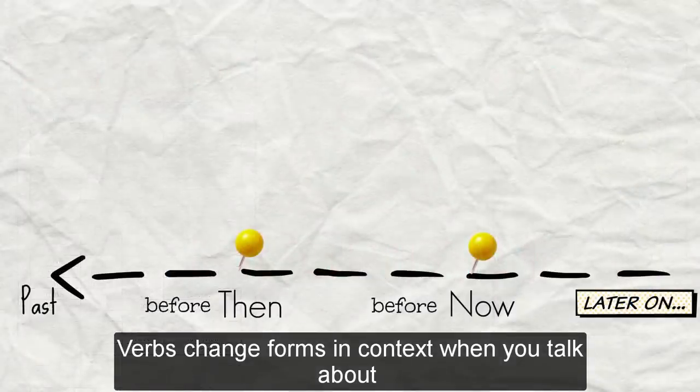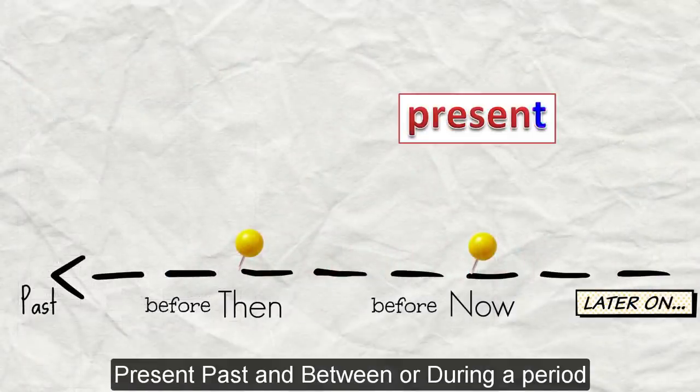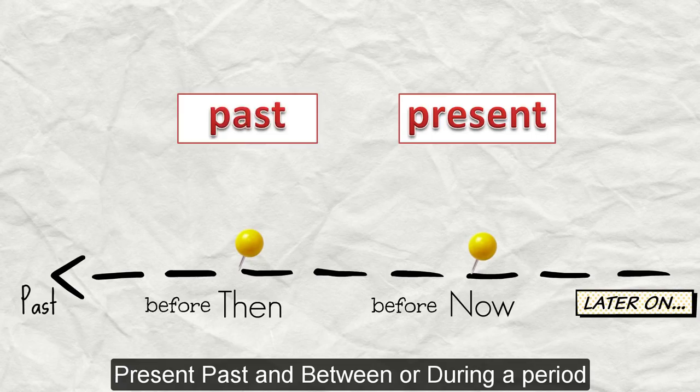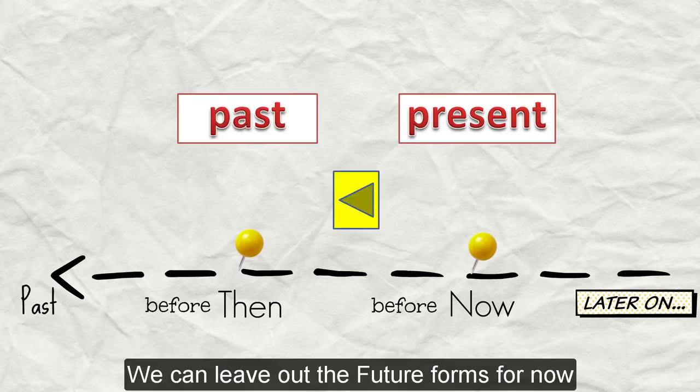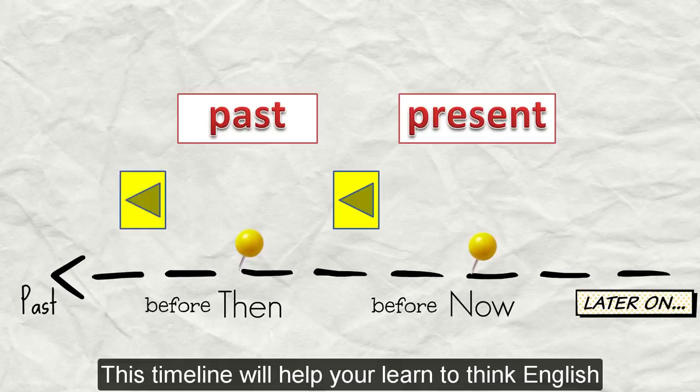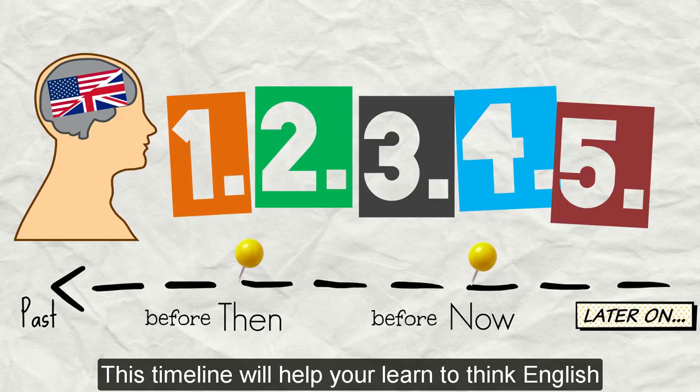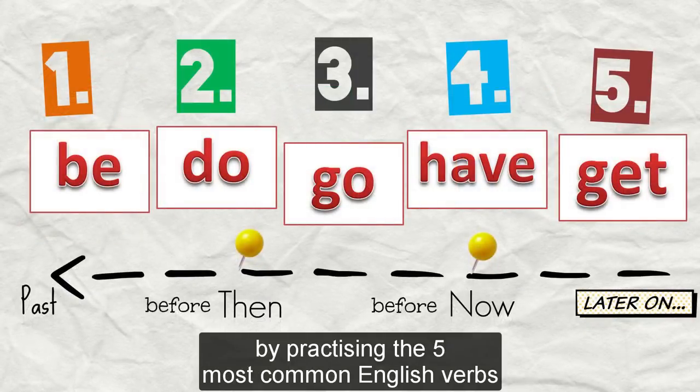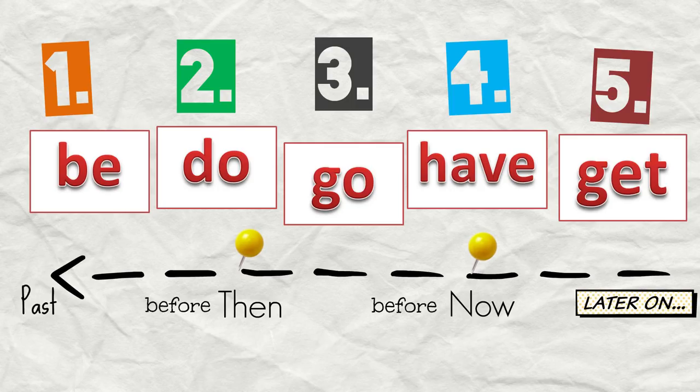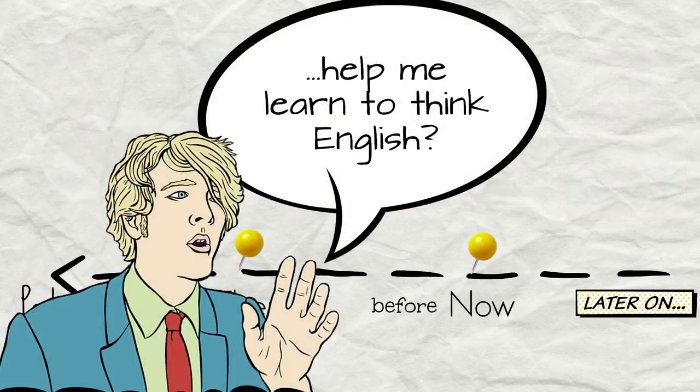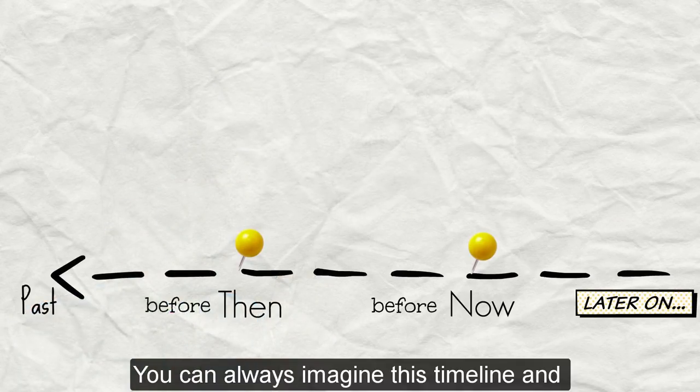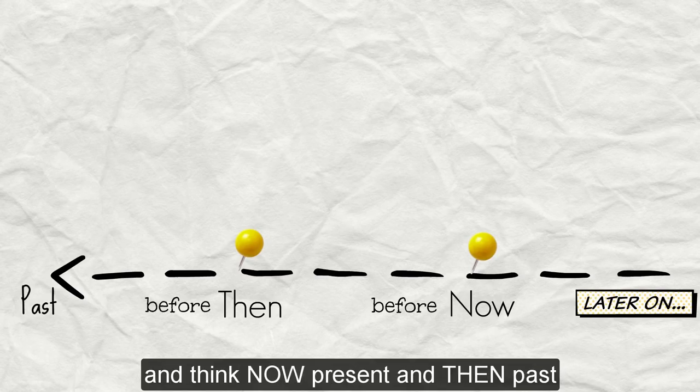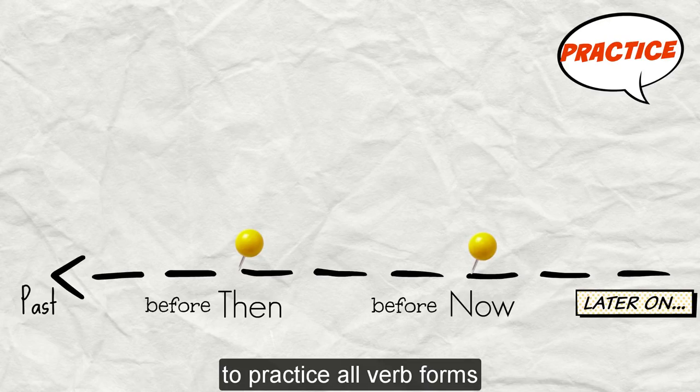Verbs change forms in context. When you talk about present, past, and between or during a period of time, we can leave out the future forms for now. This timeline will help you learn to think English by practicing the five most common English verbs: be, do, go, have, get. So how can this timeline help me learn to think English? You can always imagine this timeline and think now, present, and then, past, to practice all verb forms.